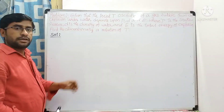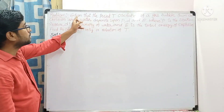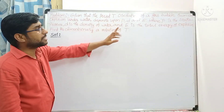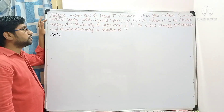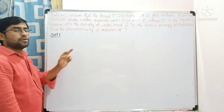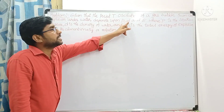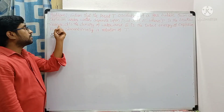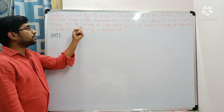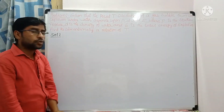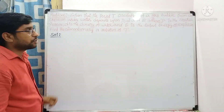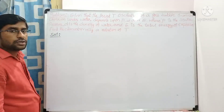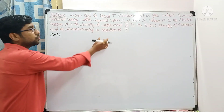Hello dear students. The question is: the period T of oscillation of a gas bubble from an explosion under water depends upon p, d, and e, where p is the static pressure, d is the density of water, and e is the total energy of the explosion. Find the dimensional relation of T.